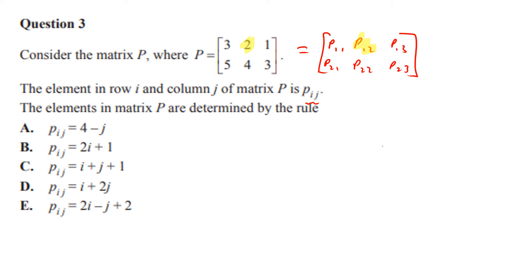4 minus j - j is 2, so 4 minus 2 is 2. That one is correct. 2 times 1 is 2, plus 1 is 3. That's not 2, which is what we want, so that's wrong. 1 plus 2 plus 1 is 4, so that one is wrong. 1 plus 2 times 2 is 5, that one's wrong.